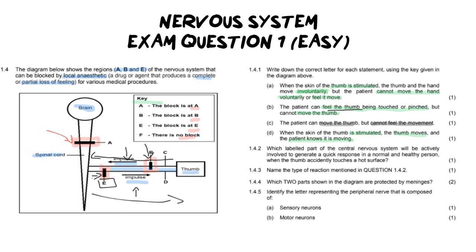Number two says which labeled part of the central nervous system will be actively involved in generating a quick response in a normal, healthy person when the thumb accidentally touches a hot surface? And that is going to be the spinal cord. Remember, that is the part that does all your reflexes.